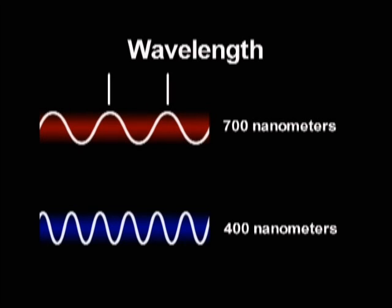In the visible part of the spectrum, the wavelength of light determines its color. Optical wavelengths are measured in nanometers, or billionths of a meter.